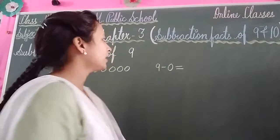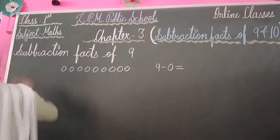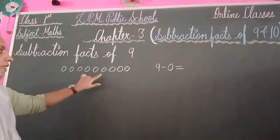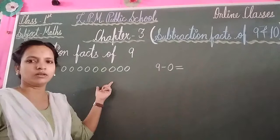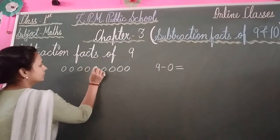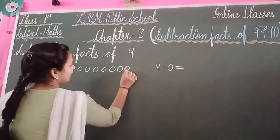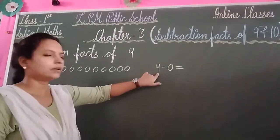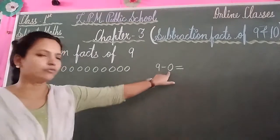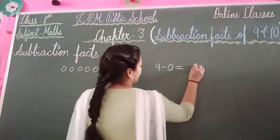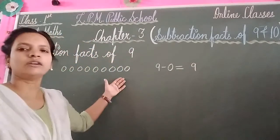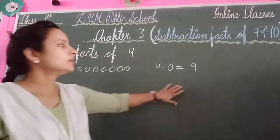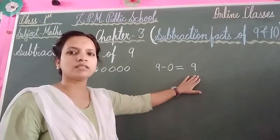So look here — Subtraction fact of 9. The first step is to draw your 9 balls: 1, 2, 3, 4, 5, 6, 7, 8 and 9. Write your number: 9 minus 0. You don't cut any ball, so all 9 balls are left. 9 minus 0 equal to 9. The answer is 9.